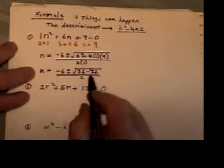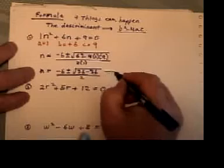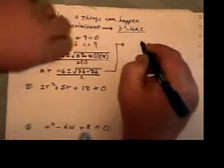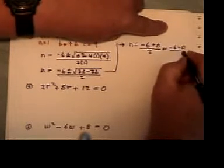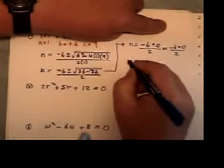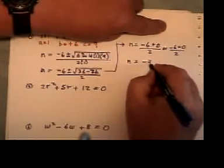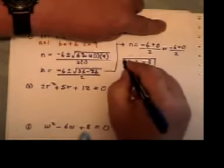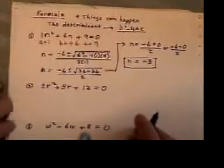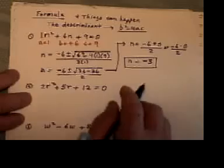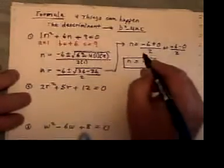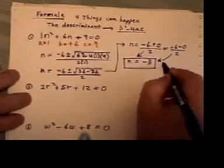So the first thing that could happen is your b squared minus 4ac part of your formula may end up being 0. So n is the opposite of 6 plus 0 over 2, or the opposite of 6 minus 0 over 2. This just gives us one answer: n is negative 3. So we end up with just one answer in that type of situation. Both of these give you the same answer.